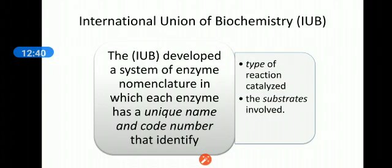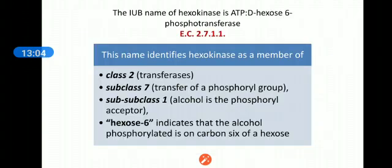The International Union of Biochemistry developed a systematic nomenclature in which each enzyme has a unique name and code number that identifies the type of reaction catalyzed and substrate involved in that reaction.